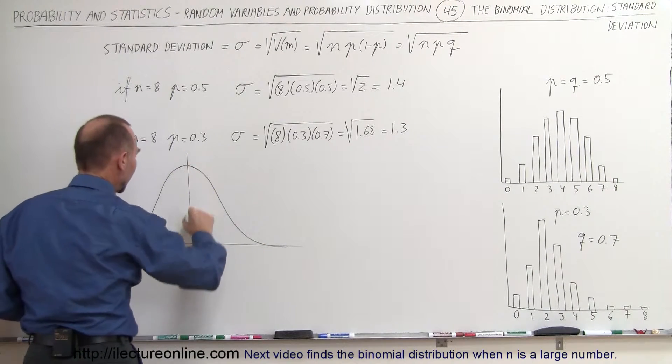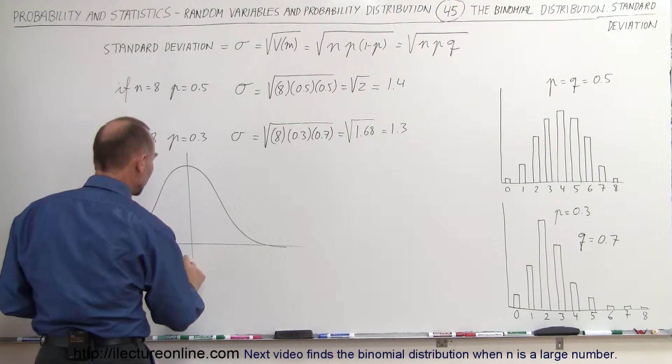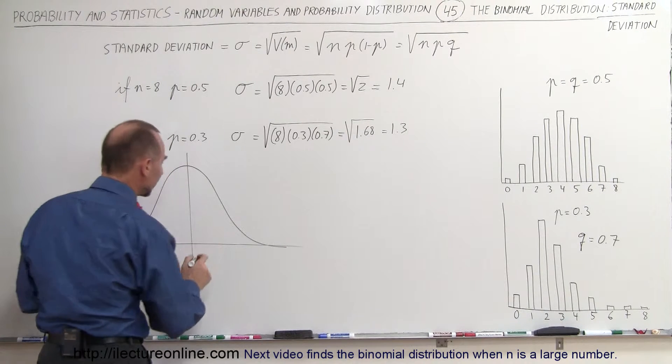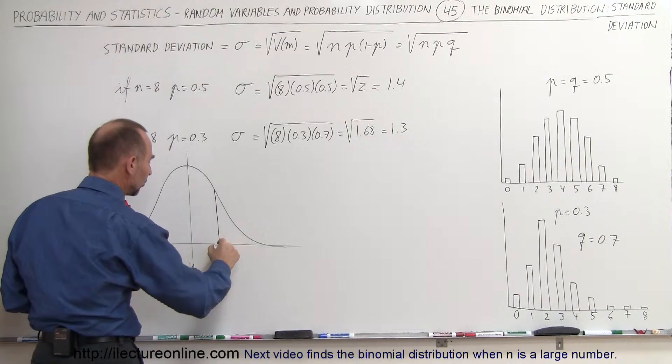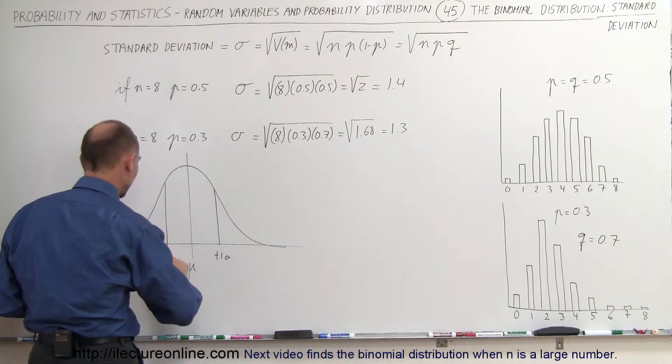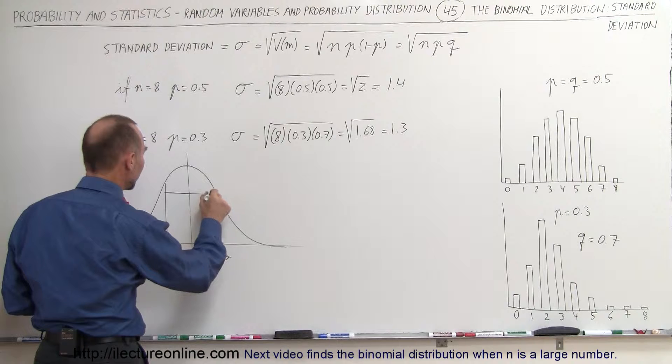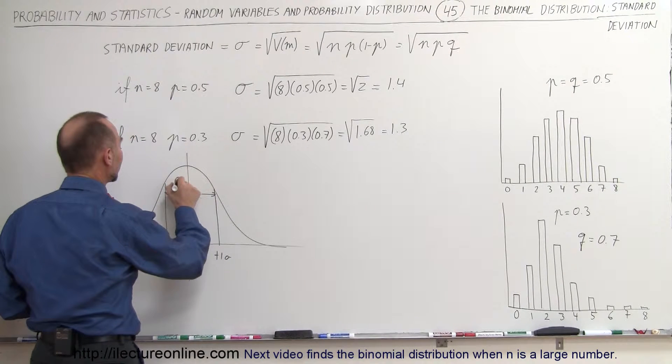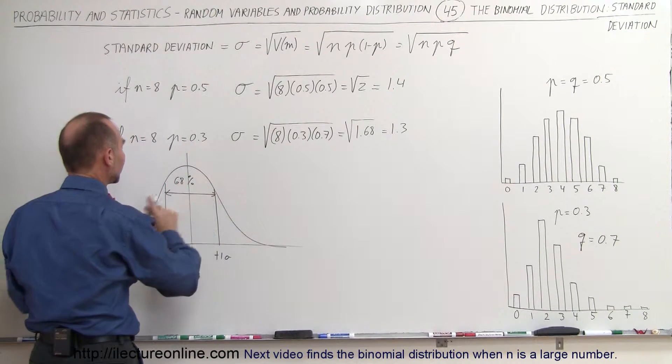Then we have 1 sigma to the right, plus 1 sigma, and 1 sigma to the left, that would be minus 1 sigma. And you can say that approximately, theoretically, that about 68% of all values will fall between plus and minus 1 sigma.